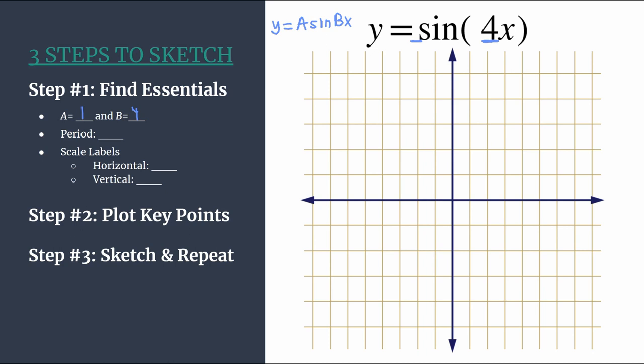B also helps us calculate the period, and for a sine graph we do that taking two pi and dividing by B. So we'll have two pi divided by B, and that simplifies to pi over two. So our period is pi over two. That's the length of one horizontal cycle. That should always fit in with B. If there are four cycles of B happening between zero and two pi, it makes sense that one cycle would happen in a distance of pi over two horizontally.